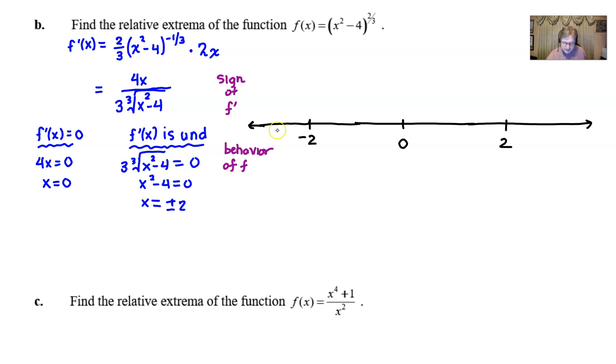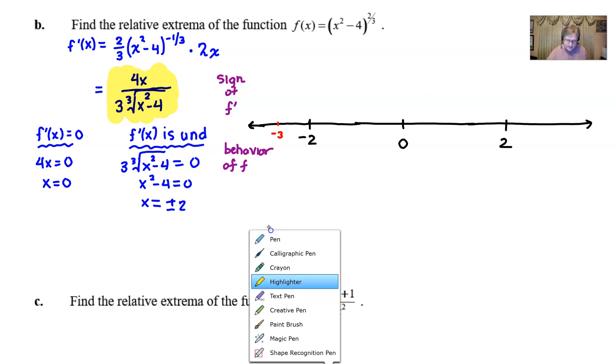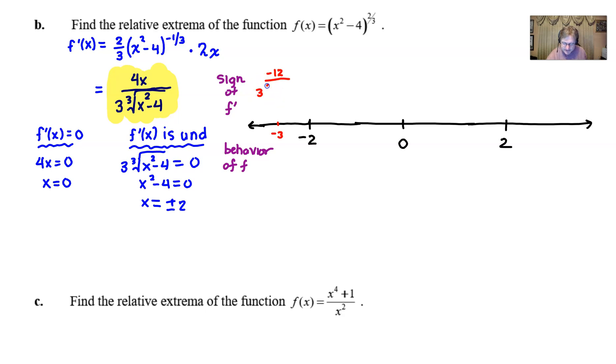Let's find a test value somewhere between negative infinity and -2. I'm going to choose -3 and plug it into our derivative. If I plug in -3 to the top, I get -12, and in the denominator I've got 3 times the cube root of ((-3)² - 4), which is 3 times the cube root of 5. If you look closely, you have a negative value, so the behavior along this interval is decreasing.